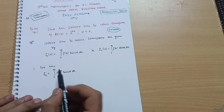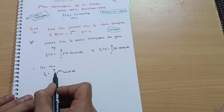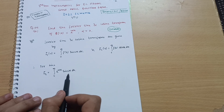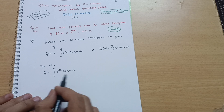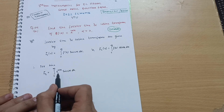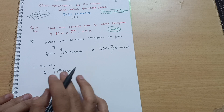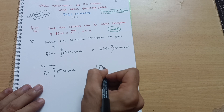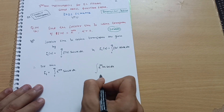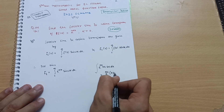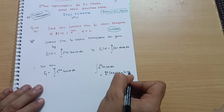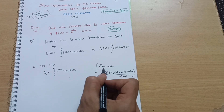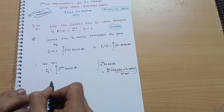First, let's calculate the Fourier sine transform. Fs(u) equals the integration from zero to infinity of e^(−αx) sin(ux) dx. There is no need to integrate using the UV rule. The standard formula is: the integration of e^(ax) sin(bx) dx equals e^(ax) times [a·sin(bx) − b·cos(bx)] divided by (a² + b²).